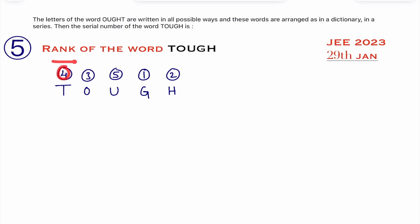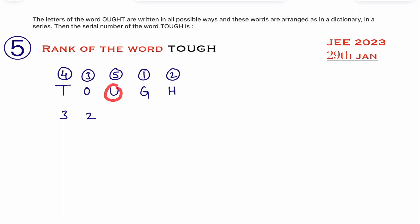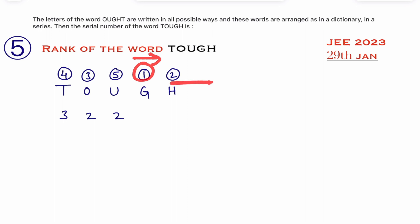Now observe T — it has number 4. Look only to the right side of 4: how many numbers are there smaller than 4? Three numbers, so write 3. For O, number 3 — to the right of 3, how many numbers are smaller than 3? Two numbers, so write 2. For U, number 5 — to the right, how many numbers are smaller than 5? Two numbers, write 2. For G, number 1 — no number to the right is smaller than 1, so write 0. And for the last letter, obviously there's nothing to the right, so write 0.